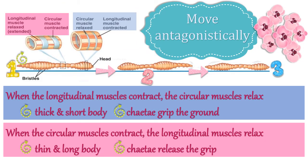The muscles in the earthworm act antagonistically. When the longitudinal muscles contract and the circular muscles relax, the body segments shorten and thicken — the chaetae at that segment grip the ground. At the same time, when the circular muscles contract and the longitudinal muscles relax, the body segments become thin and long, and the chaetae release their grip to allow the body to lengthen and move forward.